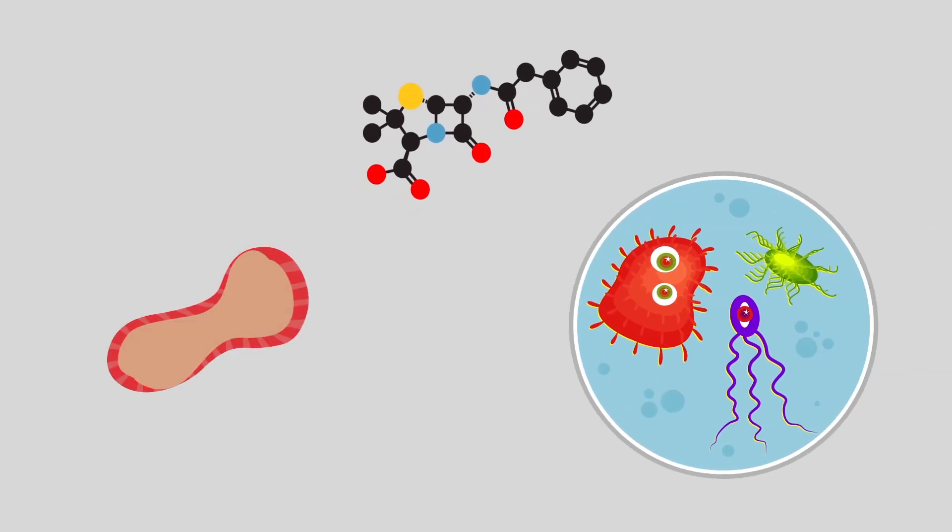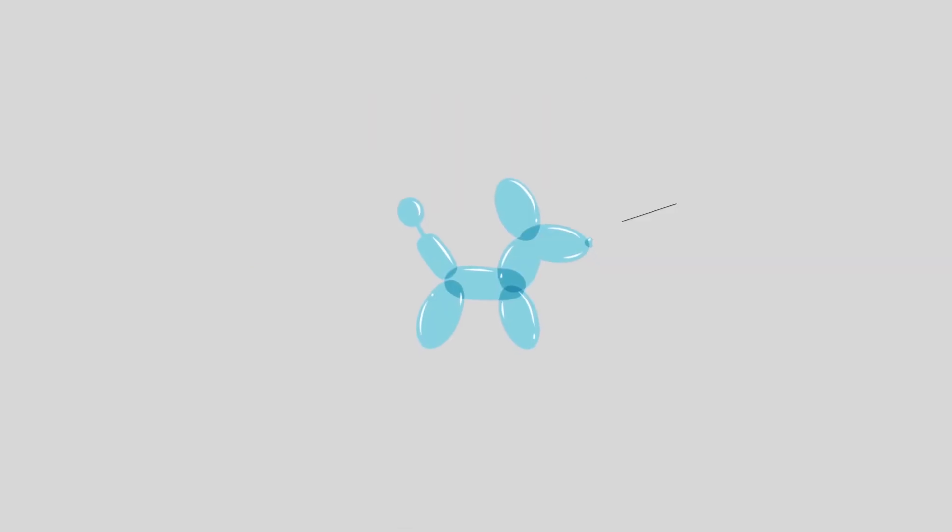Penicillin works by breaking down bacterial cell walls, killing bacteria and preventing further growth. Imagine it like popping a party balloon.